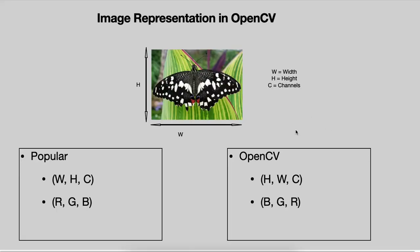In OpenCV, the representation of images is different from the conventional way. In normal images, we have width, height, and channel. In OpenCV, the height is represented first, then the width, and then the number of channels. Also, for the color order, in normal RGB images the first channel represents red, the second green, and the third blue. But in OpenCV, the blue is the first channel, green is the second, and red is the last channel. So keep this in mind when interacting with images in OpenCV.